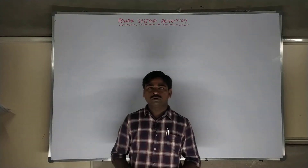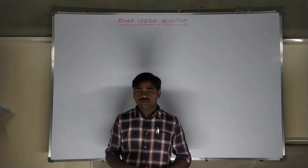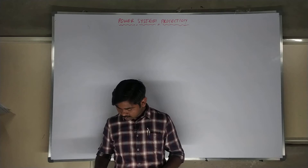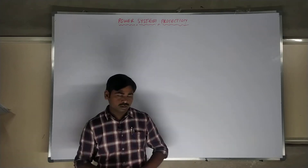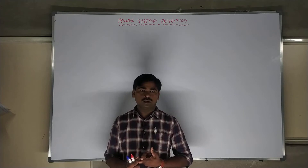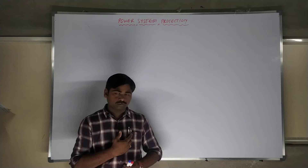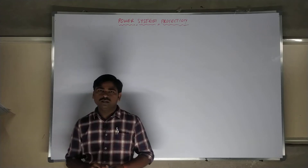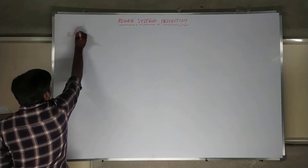Hello friends, welcome to KSP Academy. Last class we discussed the basic functions and types of switchgears — fuse, load interrupter, line insulator, circuit breaker, and relays. There are five different types of switchgear protections. Today we are going to discuss the first one, called a fuse.